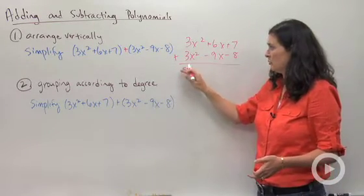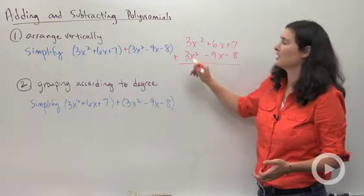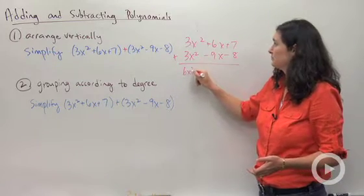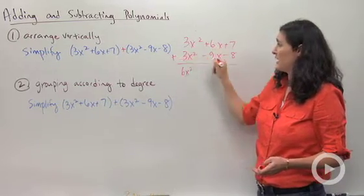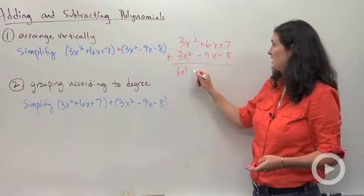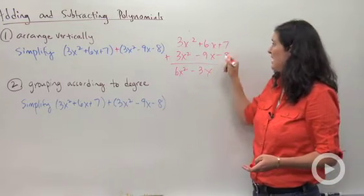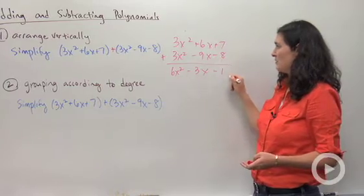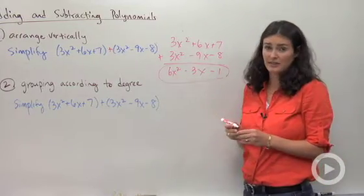3x squared plus 3x squared is, whoops, not 9. We're adding 6x squared. 6x plus negative 9x is take away 3x. And then 7 plus negative 8 is negative 1. That's my answer right there.